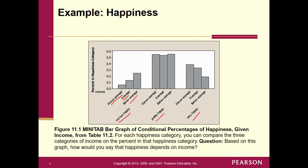It doesn't seem like there's much of a difference between groups for the ones that are pretty happy — it looks like it doesn't matter whether you were above average, average, or below average income. But what about if you were very happy? Does it seem like there's a difference there between the groups?